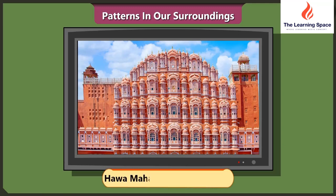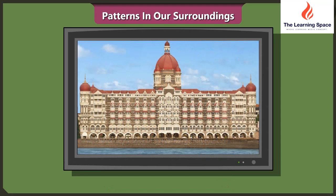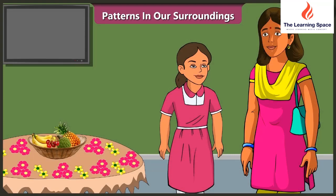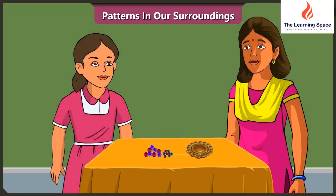Yes, this building is the Hawa Mahal at Jaipur in Rajasthan. And this is the Taj Hotel in Mumbai. Mummy, these patterns on these buildings make them look so beautiful, isn't it? Beautiful reminds me of decorating the Tiyas — there are some similar patterns on this Tiyas as well.